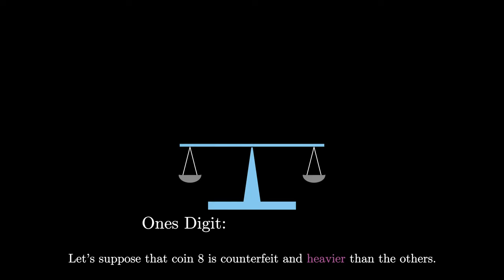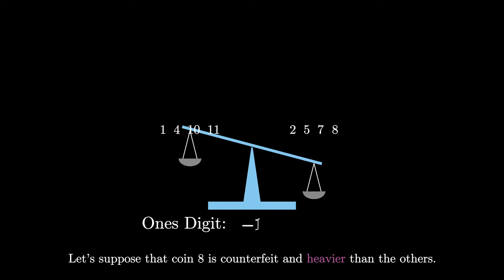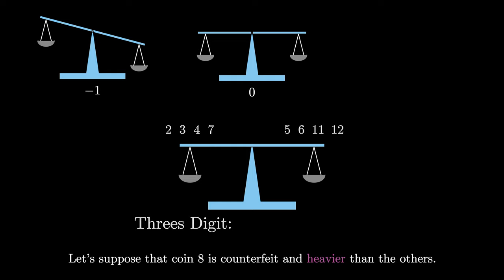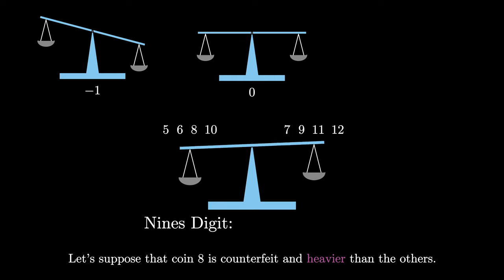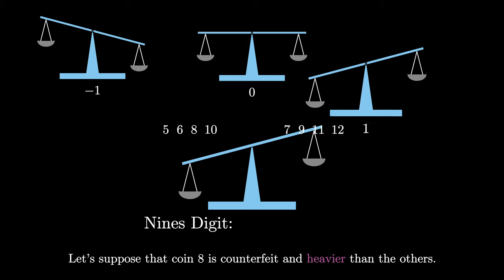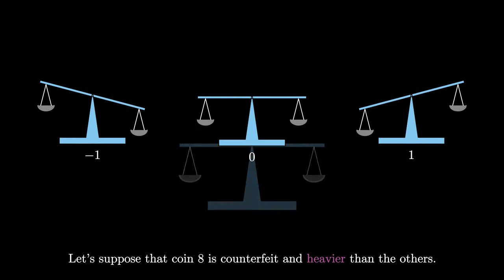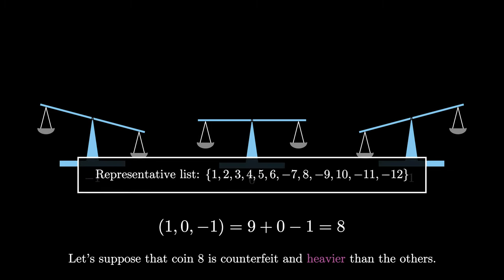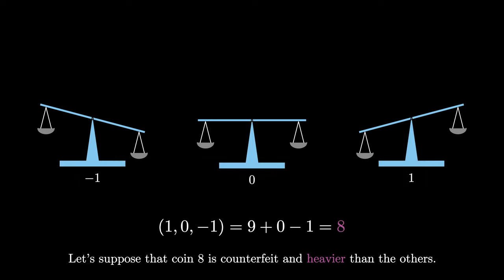Let's see this in action, supposing coin 8 is counterfeit and heavier than the rest. Our first weighing for the ones digit points to the right because that's where coin 8 is, giving a digit of negative 1. For the threes digit, coin 8 is not in the weighing, so the balance stays and we get 0. For the nines digit, coin 8 is on the left, so the scale tips left, producing a digit of 1. Reading right to left, our balanced ternary representation is 1, 0, negative 1, which equals 9 plus 0 minus 1, or 8. Since 8 is positive in our representative list, coin 8 is counterfeit and heavier.